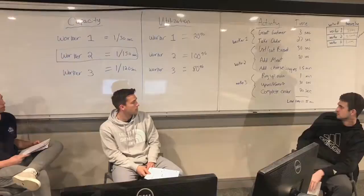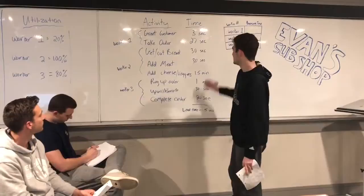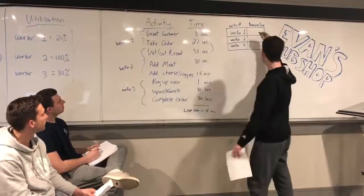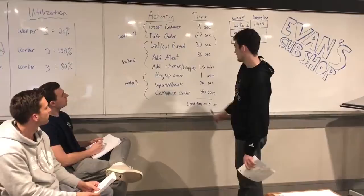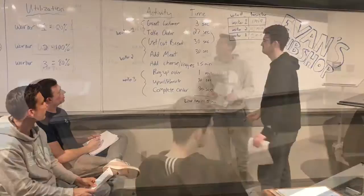We want to reduce worker two's bottleneck, and the best way to do that is to take an activity away from worker two to balance the line, which it wasn't before. We could take 30 seconds from worker two and move it to worker one. So now we have one minute processing time for worker one, two minutes for worker two, and two minutes for worker three, which gets rid of the bottleneck.